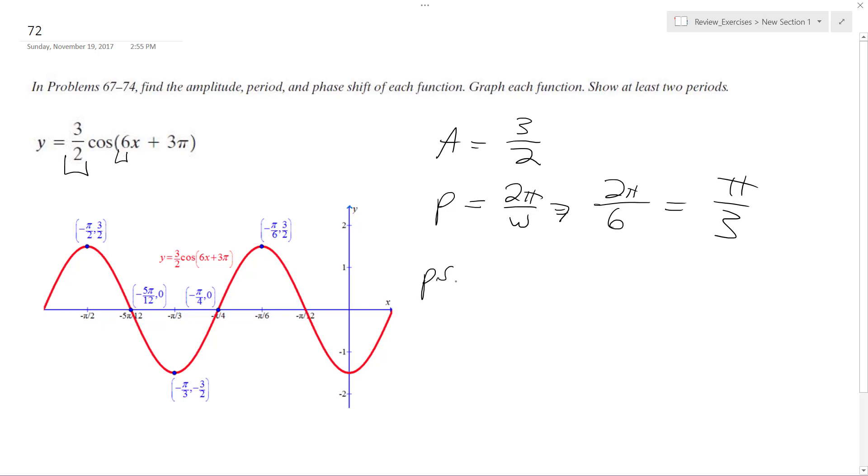And then the phase shift is going to be equal to theta divided by omega. So in this case, 3 pi divided by 6. So the phase shift is actually negative pi over 2.